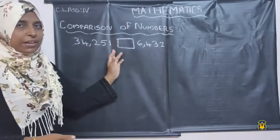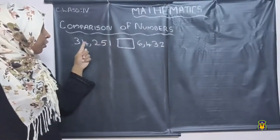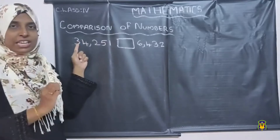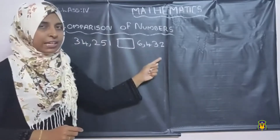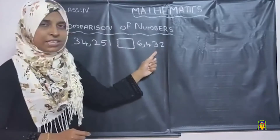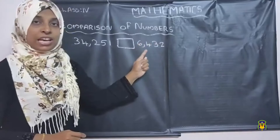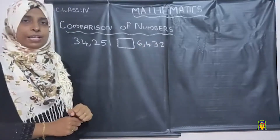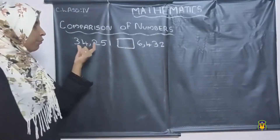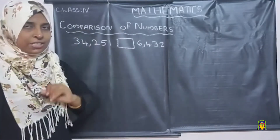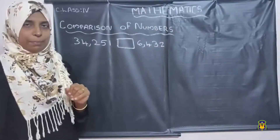What about the first number? How many digits are here? 1, 2, 3, 4, 5 — five digits. It is a five-digit number. What about the second number? How many digits are here? 1, 2, 3, 4 — it is a four-digit number. So I have two numbers: the first number is a five-digit number and the second number is a four-digit number.